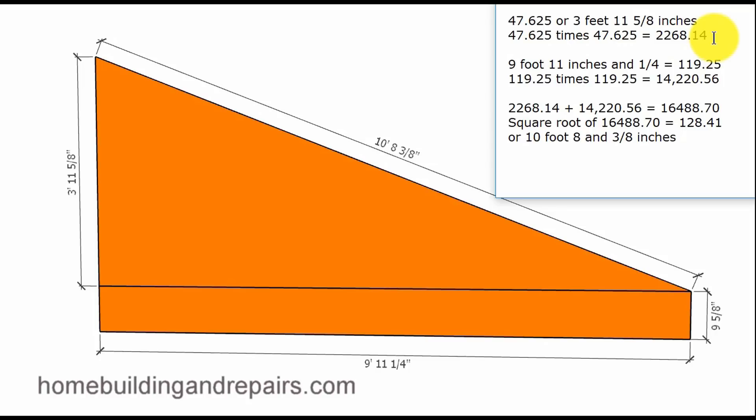Provides us with this number. And on the bottom nine foot eleven inches and a quarter gives us one hundred and nineteen and a quarter. Multiply them together. That's this down here. That gives us this number. Add the two together.